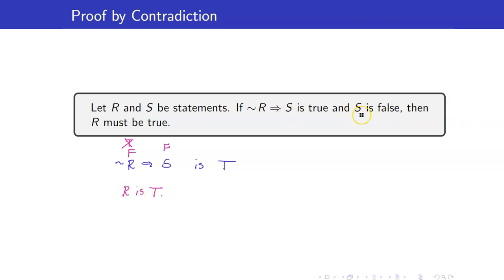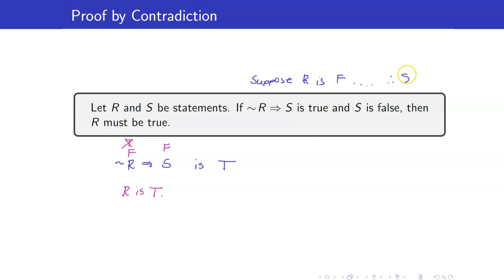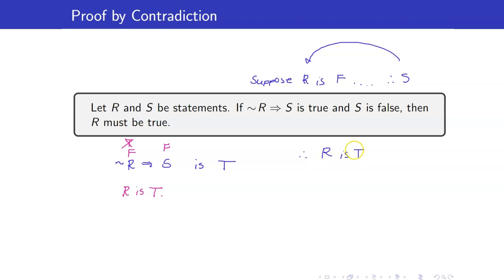In a proof by contradiction, S here is our contradiction. Here we are assuming that R is false — so we are supposing R is false — and then we arrived at a contradiction, therefore S, and that is a contradiction. If this is a contradiction, it means that the initial assumption that R is false is not true. So therefore, R must be true.